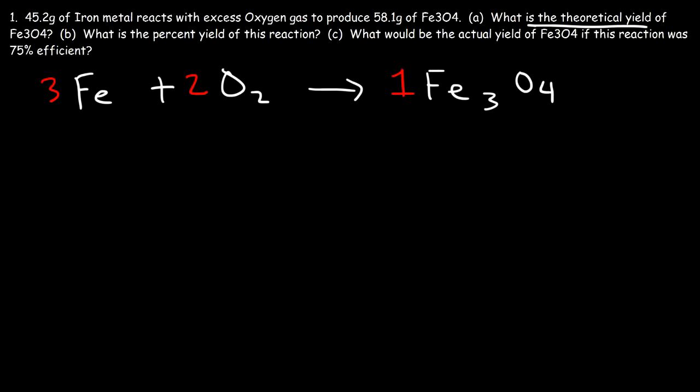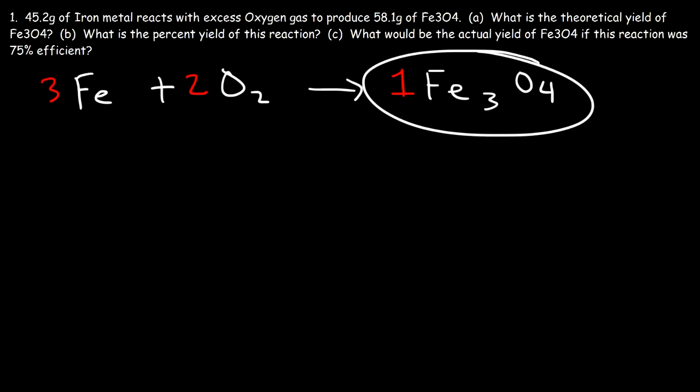How can we find the theoretical yield of Fe3O4? The theoretical yield always applies to the product — it could be the moles of the product or the grams of the product. Once you find the theoretical yield you can use it to calculate the percent yield. Everything is in grams so we're going to get the theoretical yield in grams as well. The theoretical yield is the maximum amount of Fe3O4 that can be produced in this reaction.